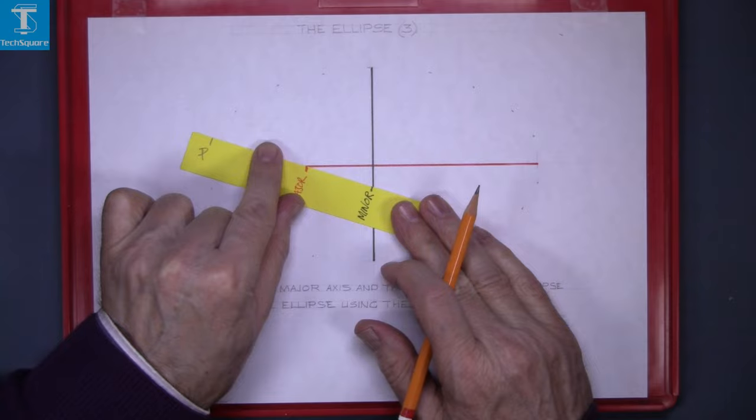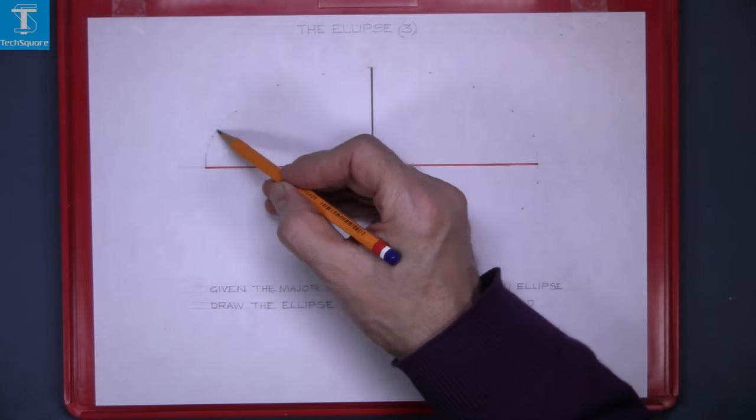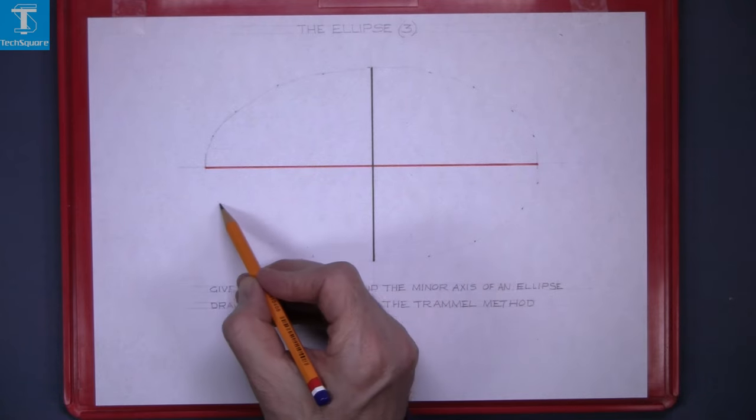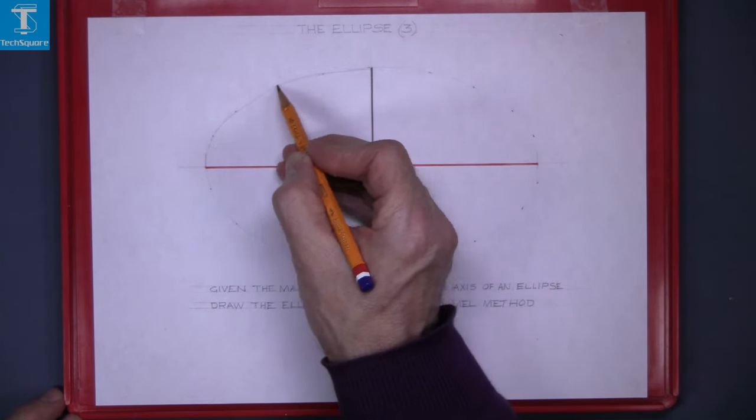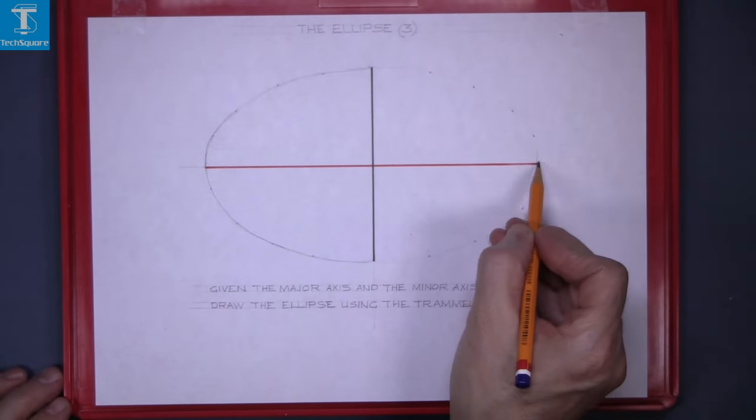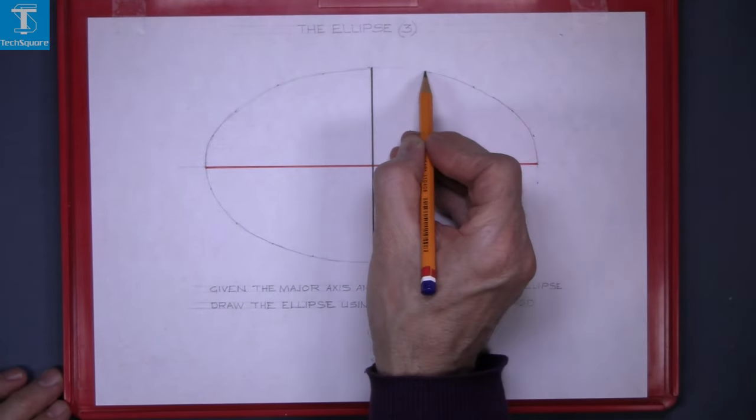Now that's the points all located. Line in your curve lightly, and then line it in with a heavy line. And that's your ellipse three complete.